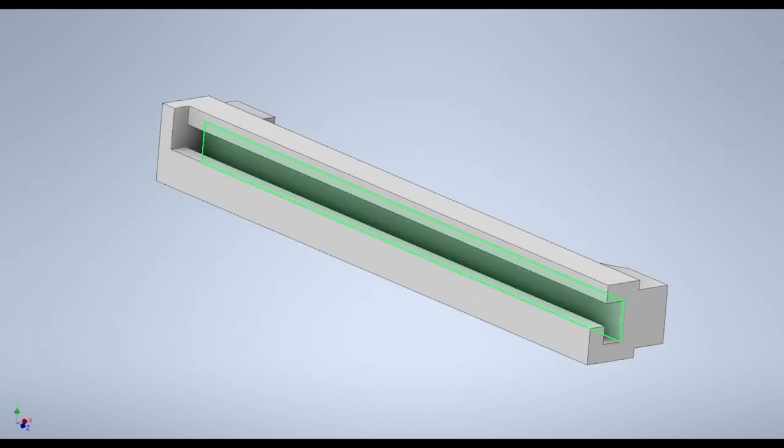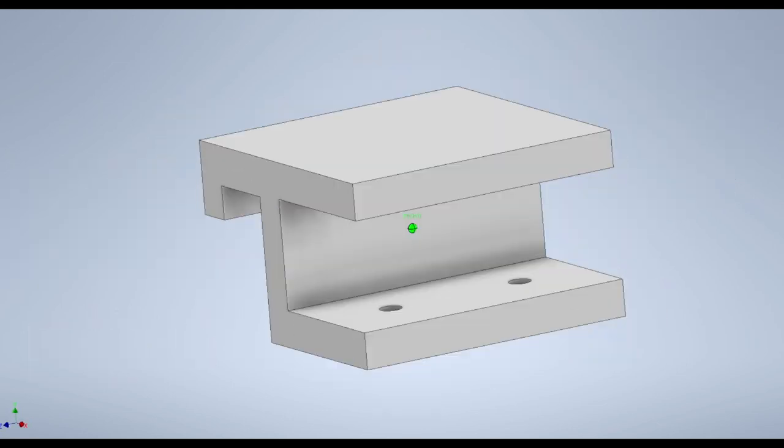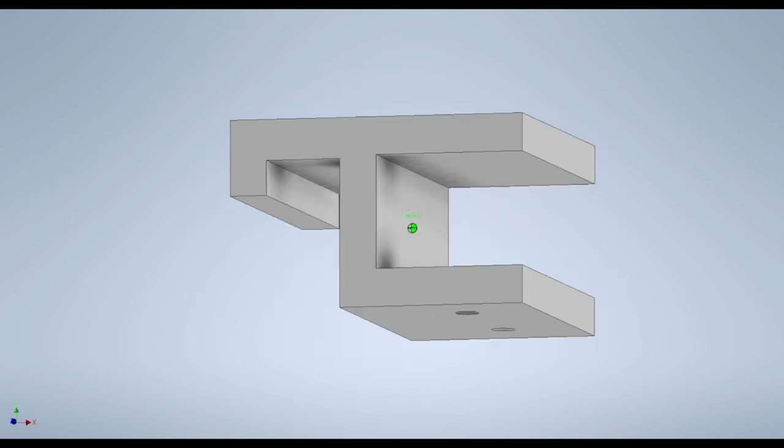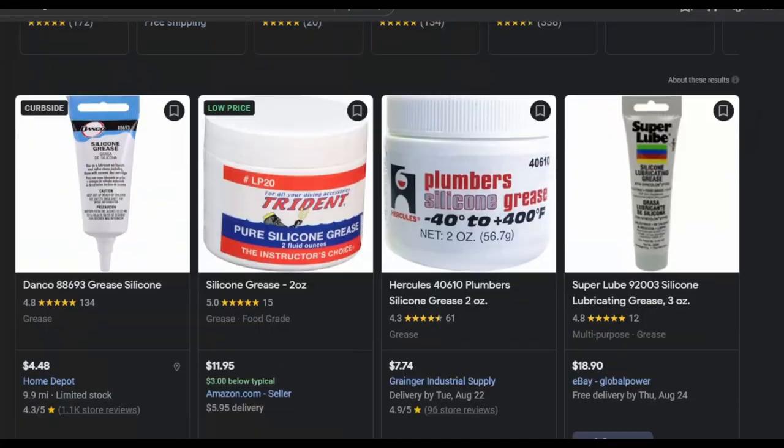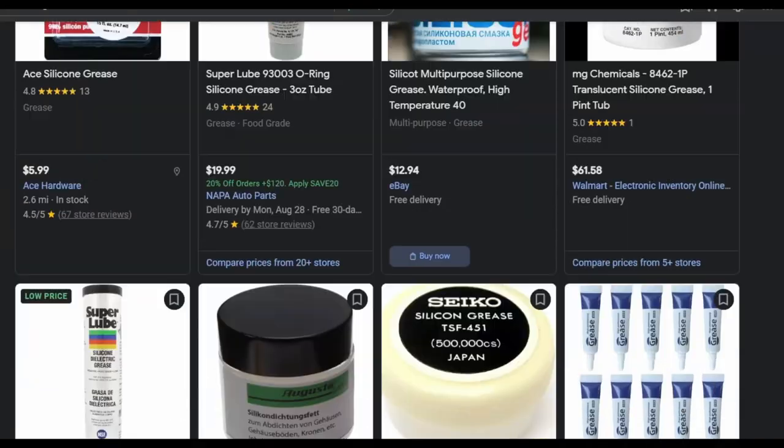With this sliding block, I'm relying on the low friction of the plastic to allow for the block to move smoothly back and forth. Hopefully it's not going to make too much noise, but I bought some non-toxic silicone grease just in case.